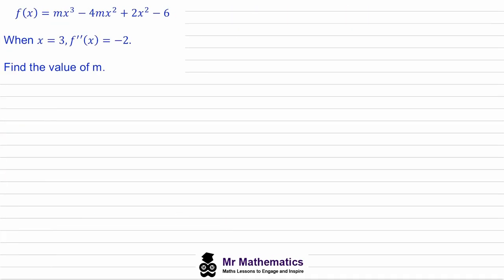Here we've got an exam-style question. We're given that f(x) equals mx³ minus 4mx² plus 2x² minus 6, and we've been told that when x equals 3, f''(x) equals negative 2. We've been asked to work out the value of m.